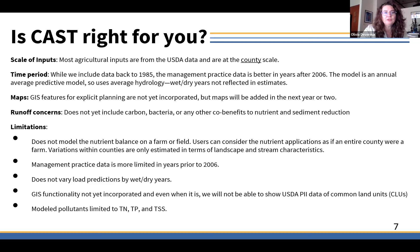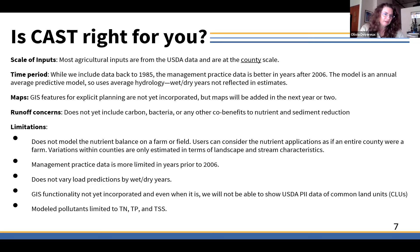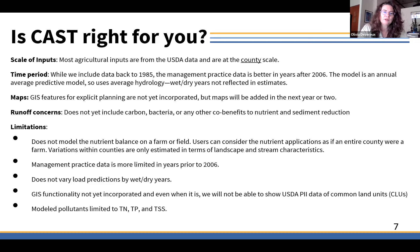We have GIS features in terms of maps we provide, but we don't yet have explicit GIS features for planning — like putting a point on a map. We are working on adding those and will get that up to speed in the next year or two. We don't yet include carbon, bacteria, or other co-benefits in terms of a numerical estimation. Carbon will likely be in by the end of the year. The limitations include that we don't allow you to say exactly how many pounds of fertilizer you're putting on your farm or field, but we do have estimates in there based on other inputs like number of animals.